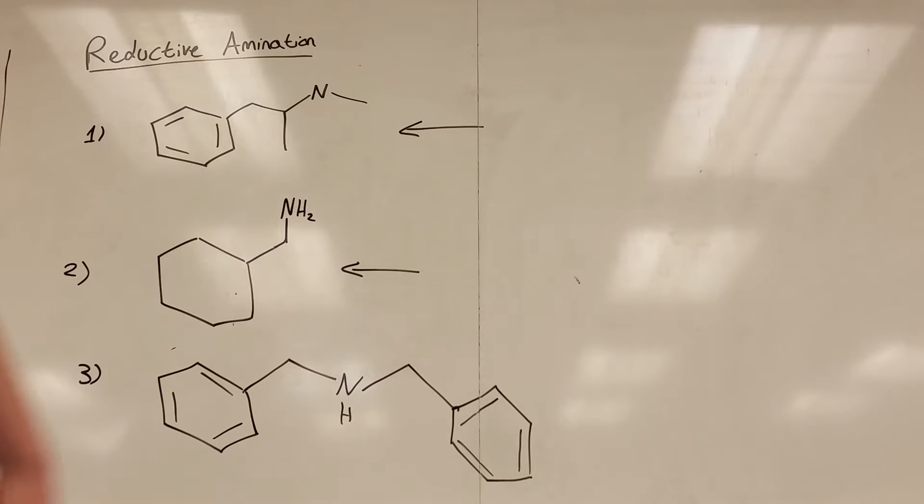Here are three synthesis problems that go over reductive amination. For question one, create this structure from structures containing four carbons or less and benzene. For this one, four carbons or less. And for this one, four carbons or less and benzene. Okay, so give those a try. Pause the video if you want.